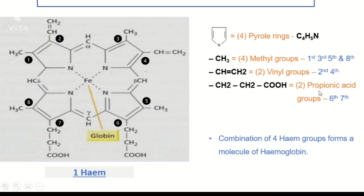The fourth component is the propionic acid group, with molecular formula CH₂-CH₂-COOH. There are two propionic acid groups in the heme structure, at the sixth and seventh positions of the pyrrole ring. At the sixth position: CH₂-CH₂-COOH, and similarly at the seventh position there is another propionic acid group.